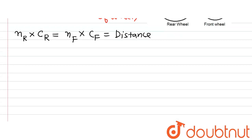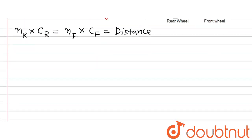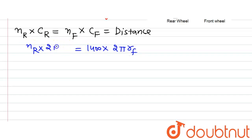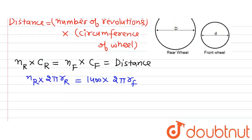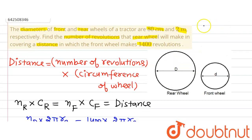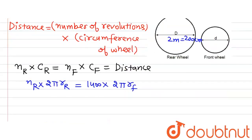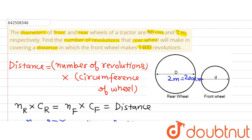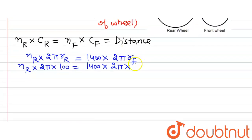Now let's put in the values. The number of revolutions by the front wheel is 1400, so we have 1400 × 2π × r_front = N_rear × 2π × r_rear. The diameter of the rear wheel is 2 meters, which equals 200 cm, so its radius r_rear = 100 cm. The diameter of the front wheel is 80 cm, so its radius r_front = 80 ÷ 2 = 40 cm.